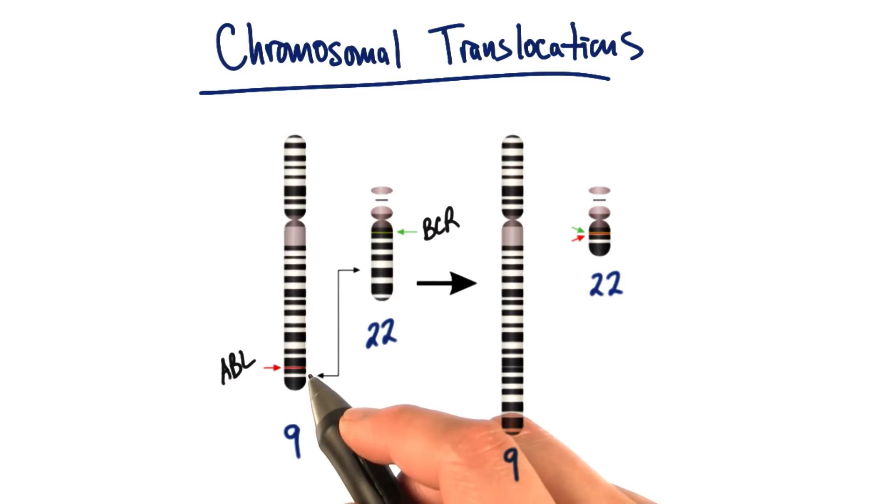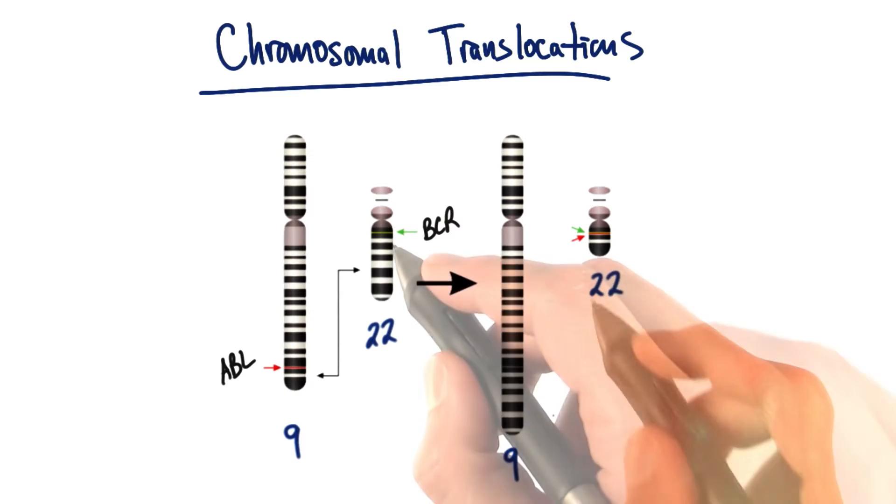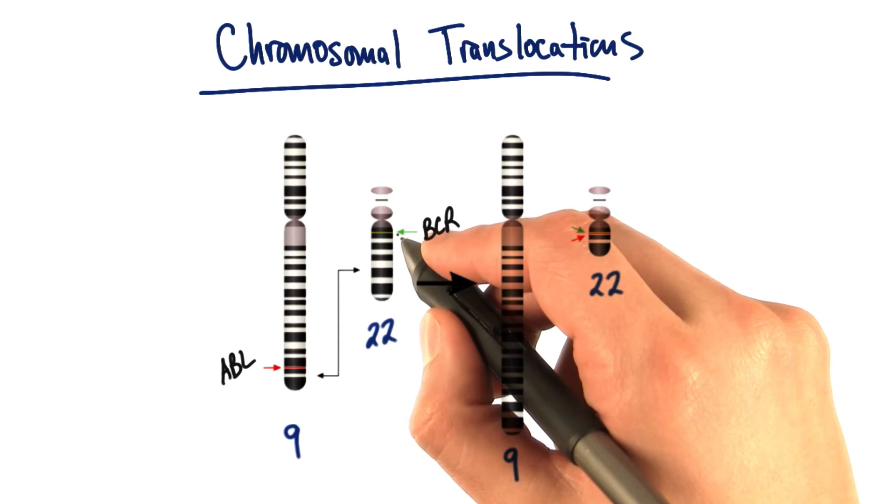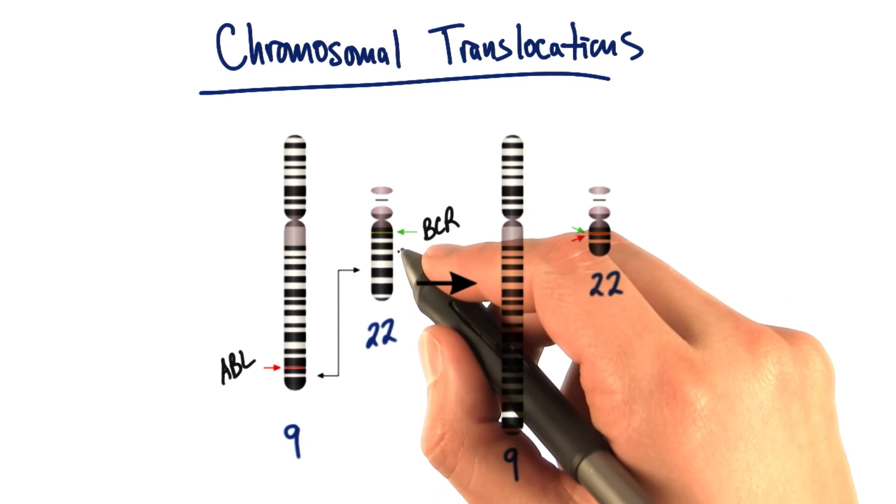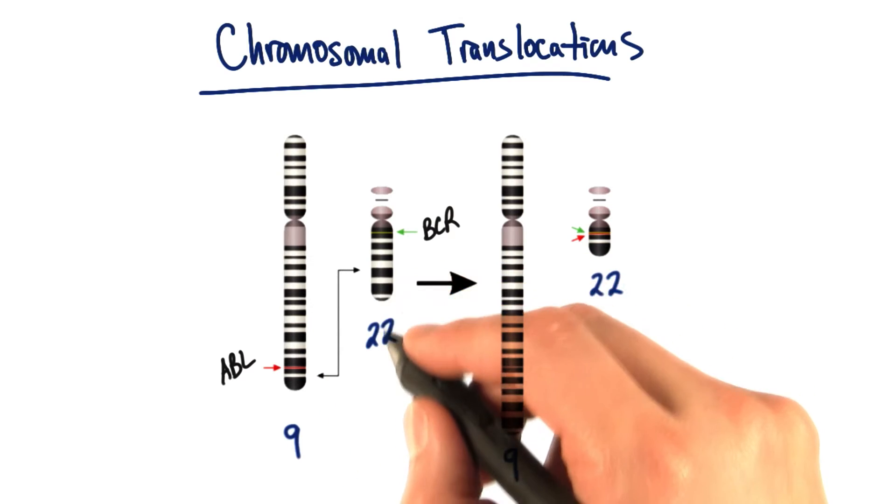What happens is the tip of chromosome 9 here can actually break off, and this end from here down on chromosome 22 can get broken off, and these pieces get swapped.